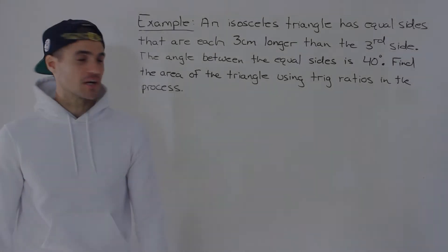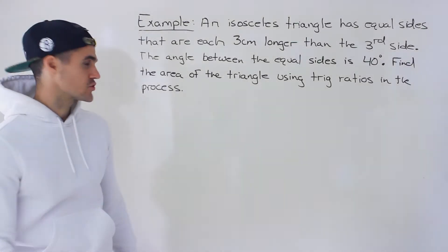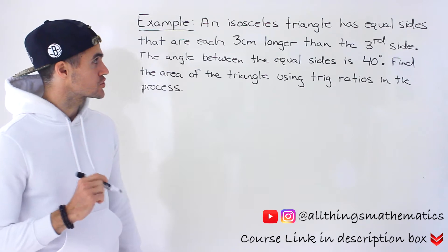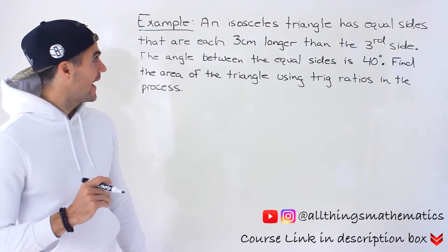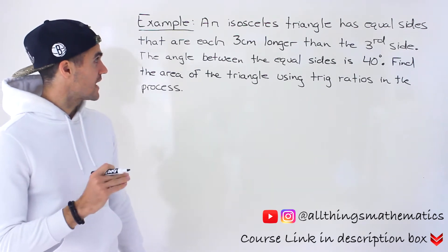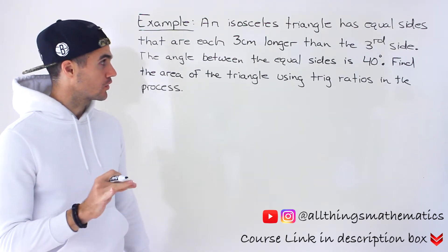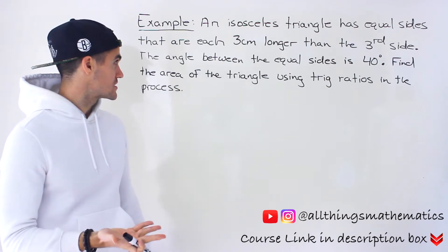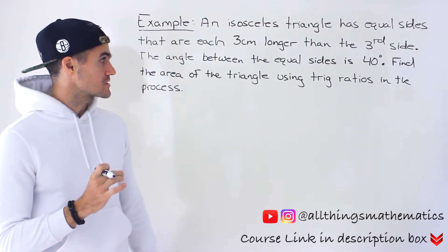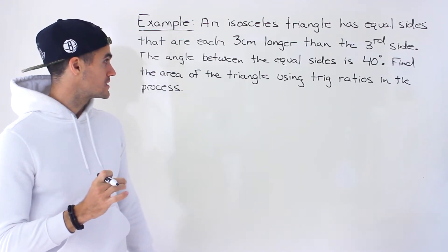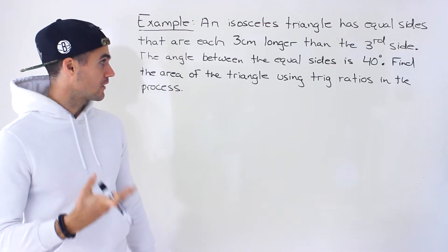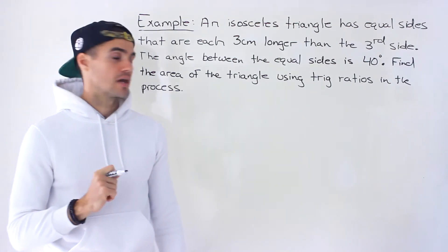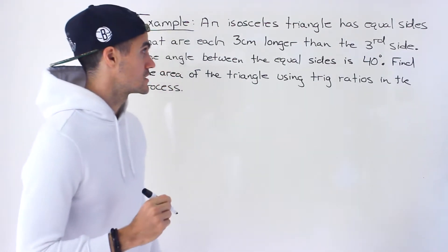Welcome back everyone, Patrick here. Moving on to another question dealing with trigonometry. We're told that an isosceles triangle has equal sides that are each three centimeters longer than the third side. The angle between the equal sides is 40 degrees and we have to find the area of the triangle using trig ratios in the process.